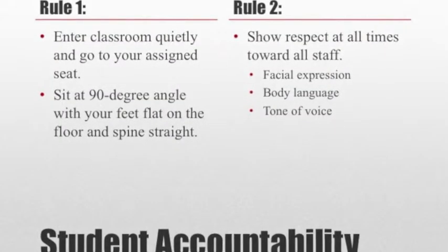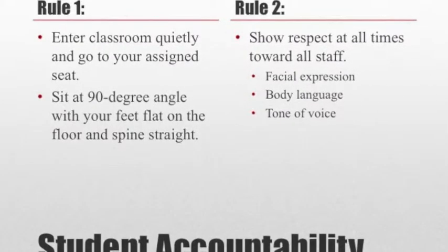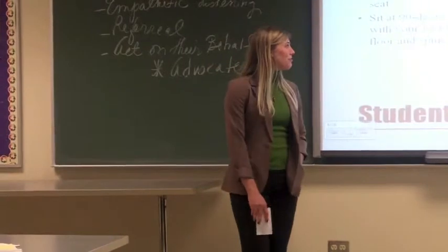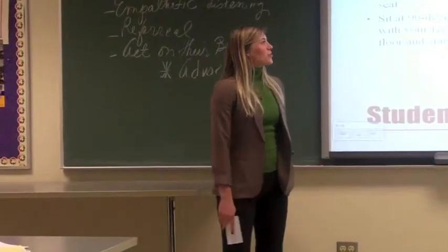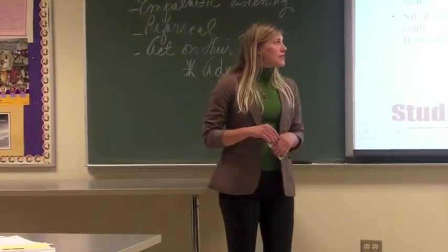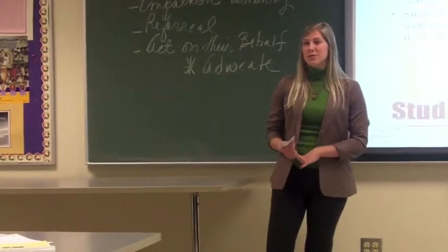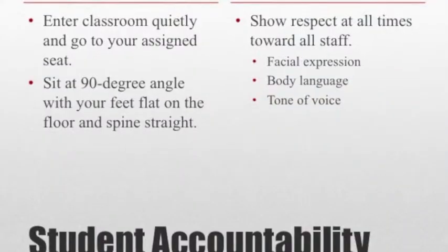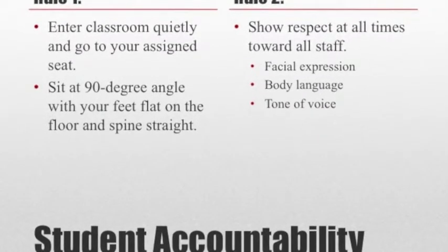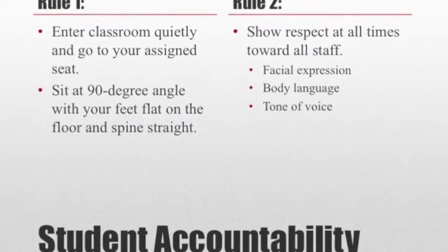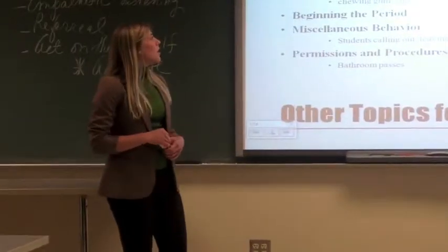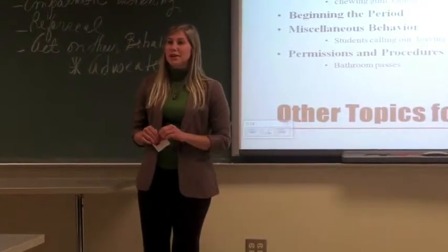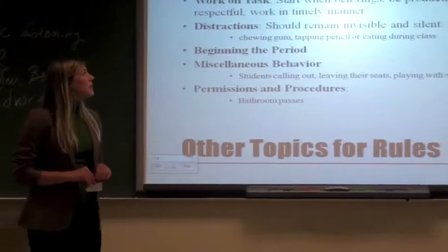So these are a few of the rules that he thinks need to be enlisted into the classroom. When students first enter the classroom, they need to be quiet and go right to their assigned seats. He thinks they need to sit at a 90 degree angle with your feet flat on the floor and your spine straight. Rule 2, show respect at all times toward the staff. He says that students can do this through their facial expressions, body language, and also tone of voice towards authority. Some other ideas for rules that he uses are how to work on tasks. He says when the bell rings, you start working, you be productive, respectful, and timely in the way that you work and manage your classroom. Distractions, he said that they should remain invisible and silent. He doesn't want students chewing gum, tapping their pencil, or eating during class.